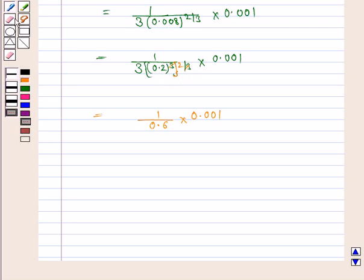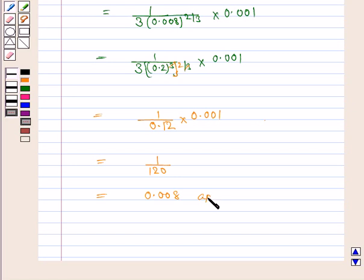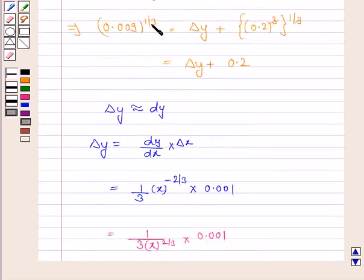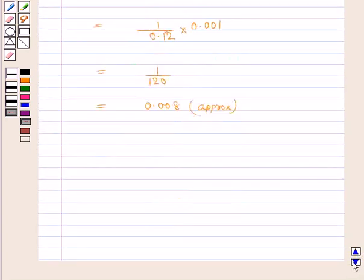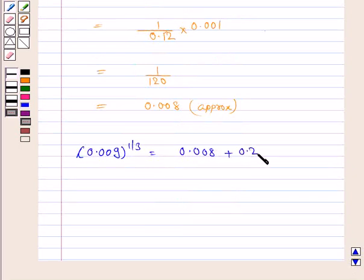We have 0.2 squared equals 0.04, and 0.04 times 3 equals 0.12, so this equals 0.001 divided by 0.12, which equals 1 upon 120, approximately equal to 0.008. Therefore, 0.009^(1/3) = delta y + 0.2 = 0.008 + 0.2 = 0.208.